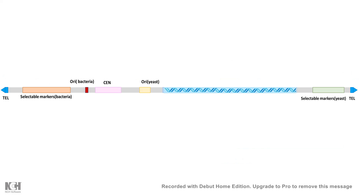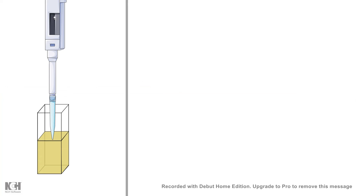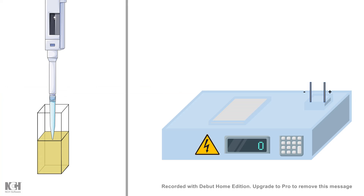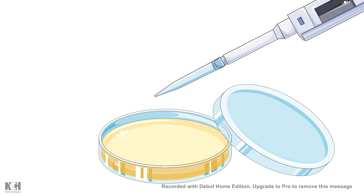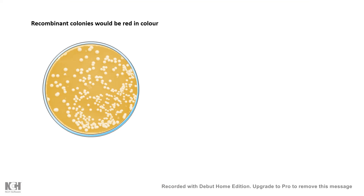After inserting the gene of interest, we now have to insert the whole Yeast Artificial Chromosome vector inside yeast. That is done by a transformation reaction. In the case of yeast, the preferred transformation mode is via electroporation, because yeast has a cell wall and it is very hard to get DNA in with just the heat shock method.